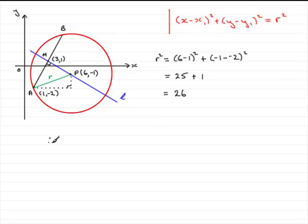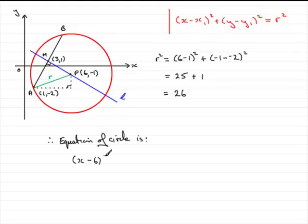Therefore, we're in a position to write the equation of the circle. Using the standard form, it is (x minus 6) squared plus (y minus minus 1) squared — which we can write as (y plus 1) squared — equals 26. And that brings us nicely to the end of this question.